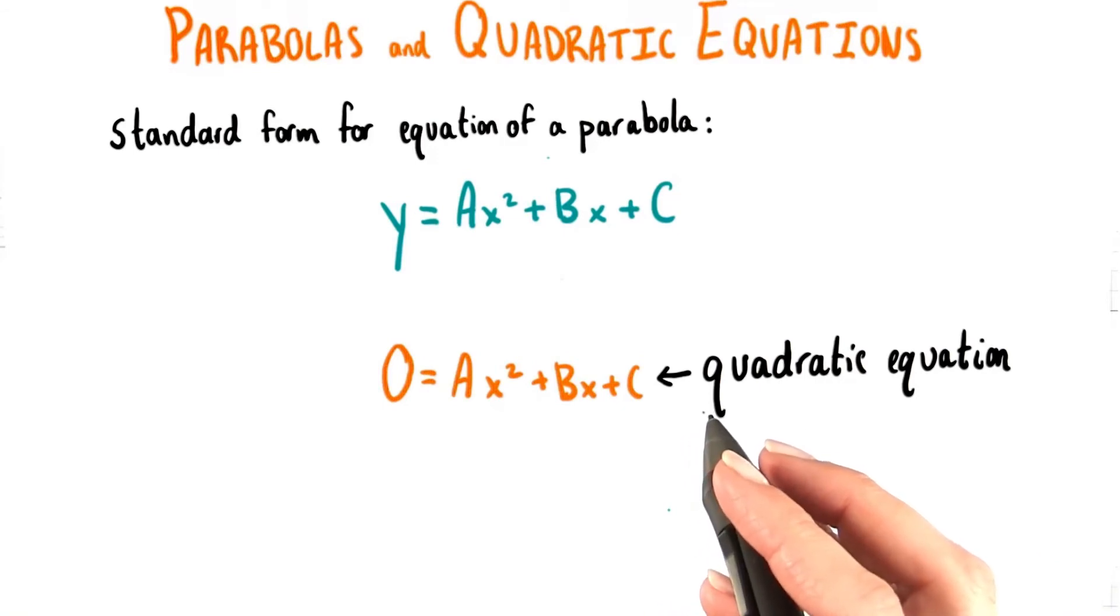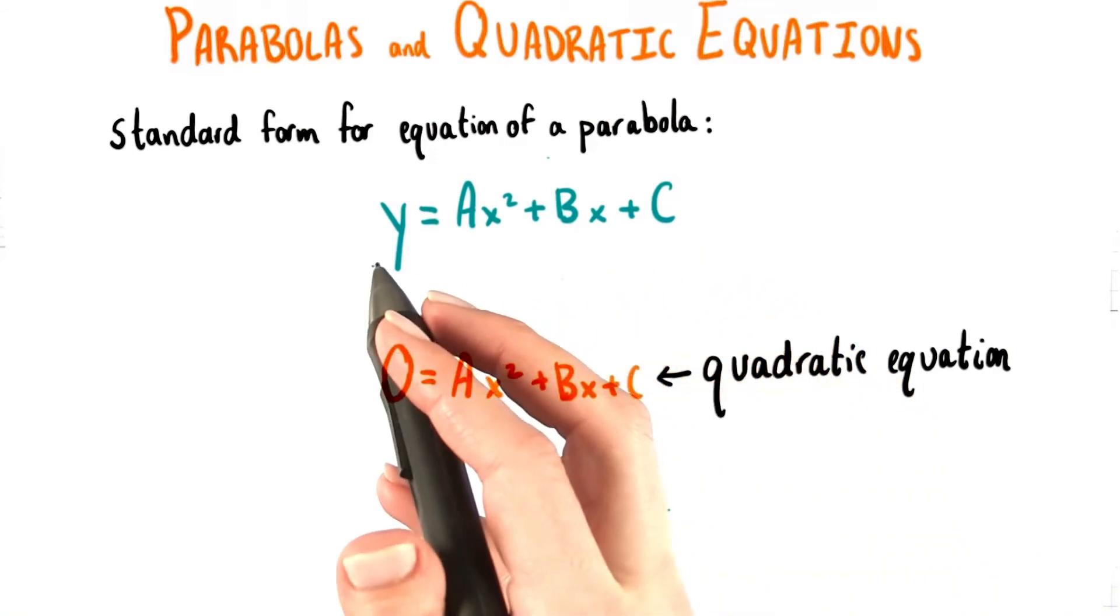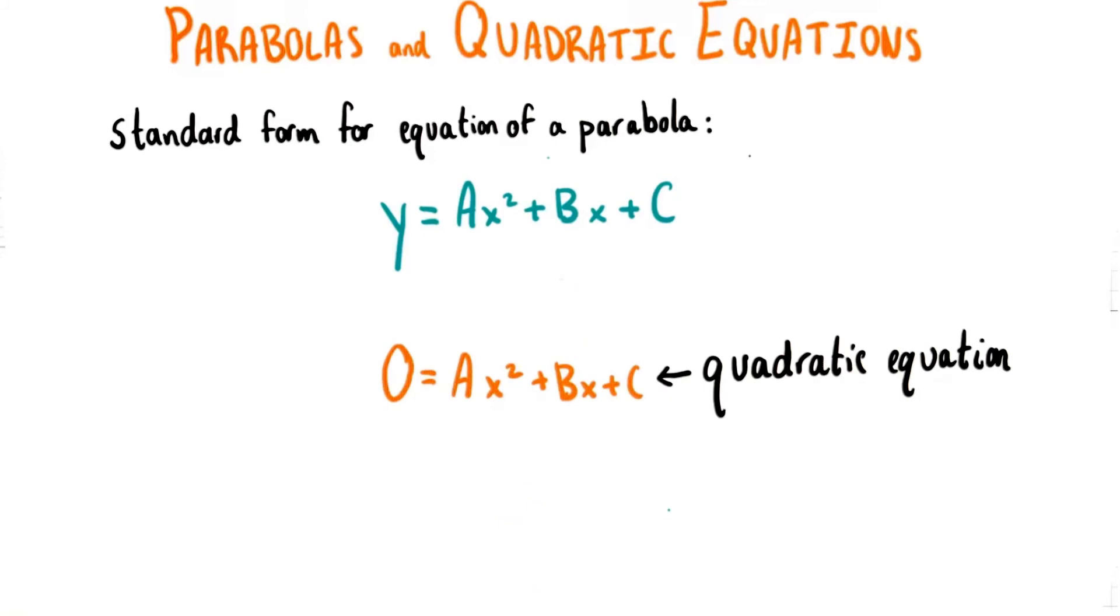Now a quadratic equation has one of the same restrictions that the standard form for the equation of a parabola did. This coefficient a here is not allowed to equal 0.